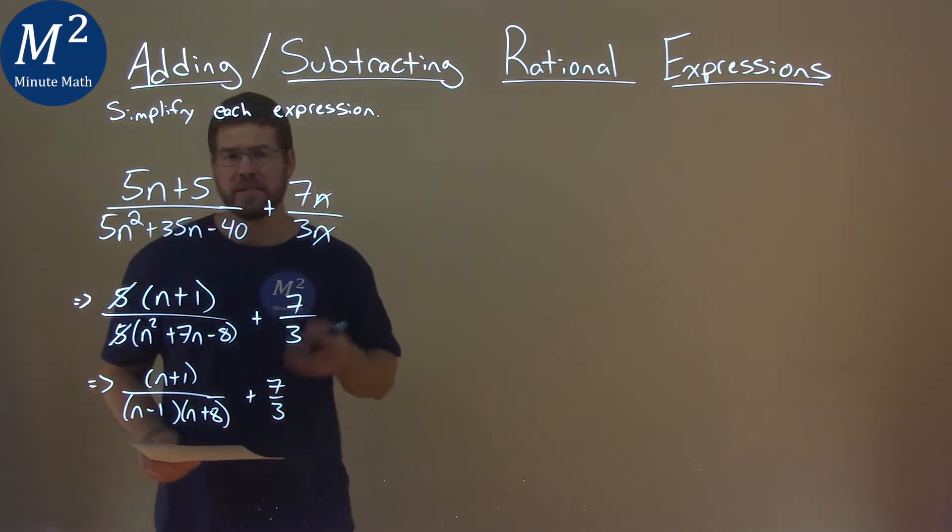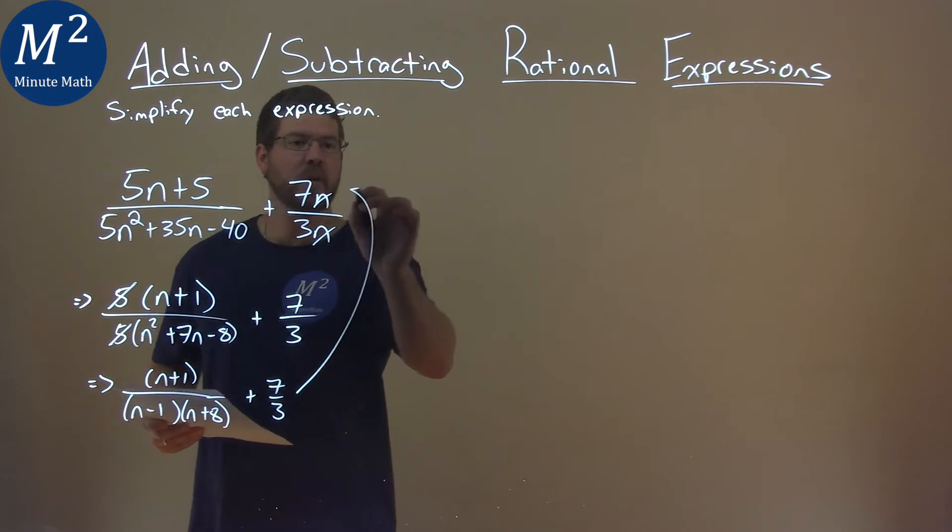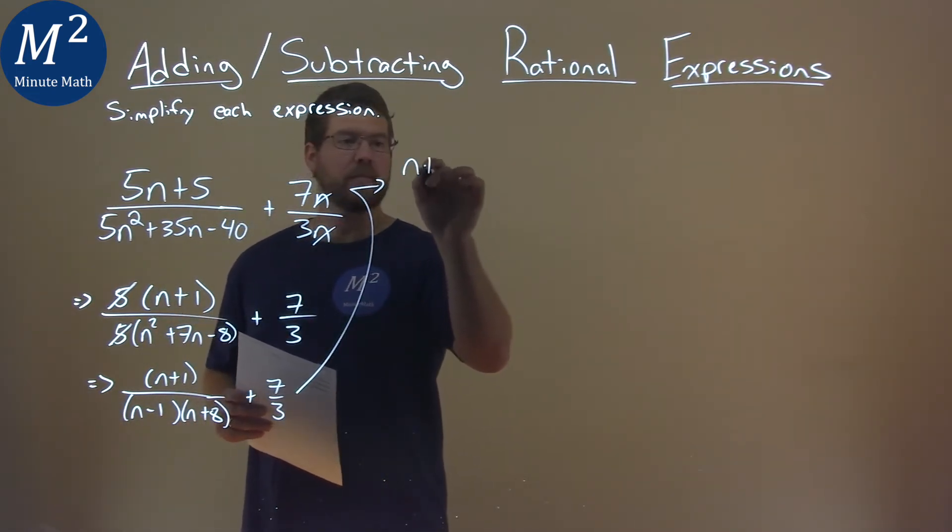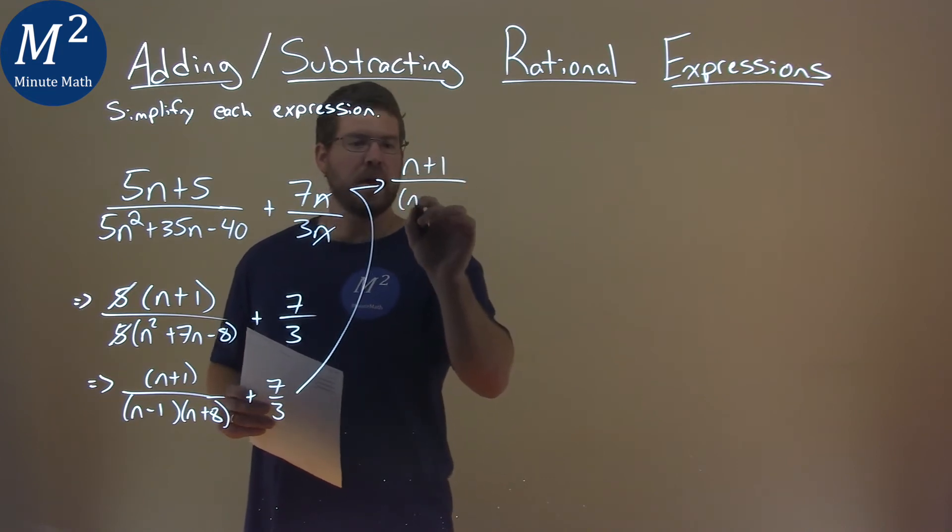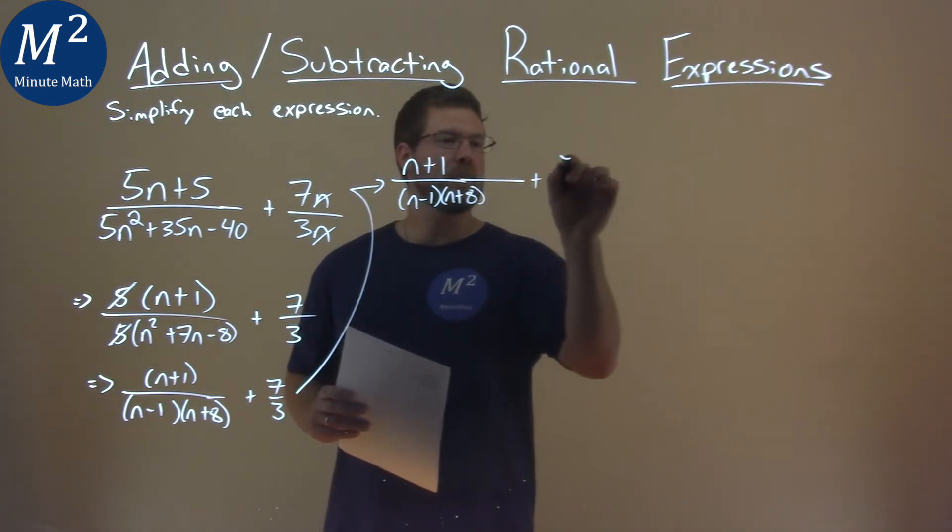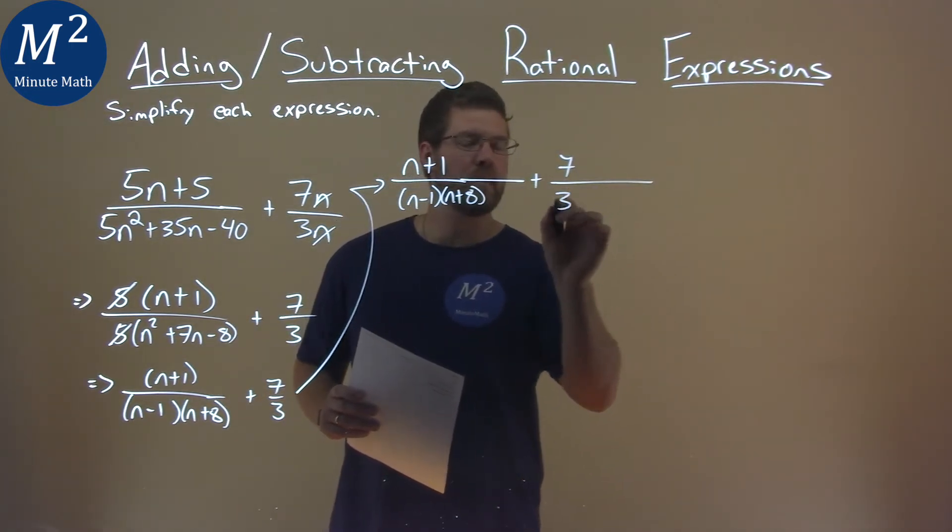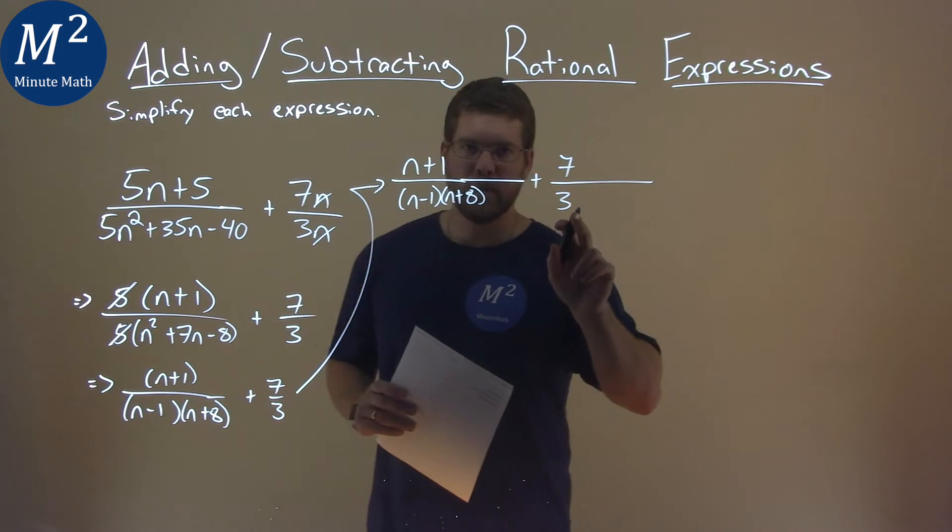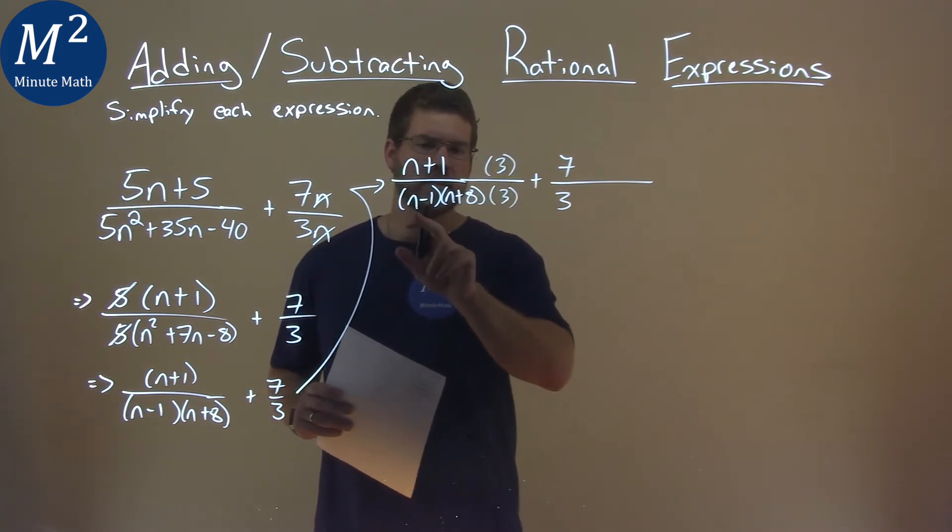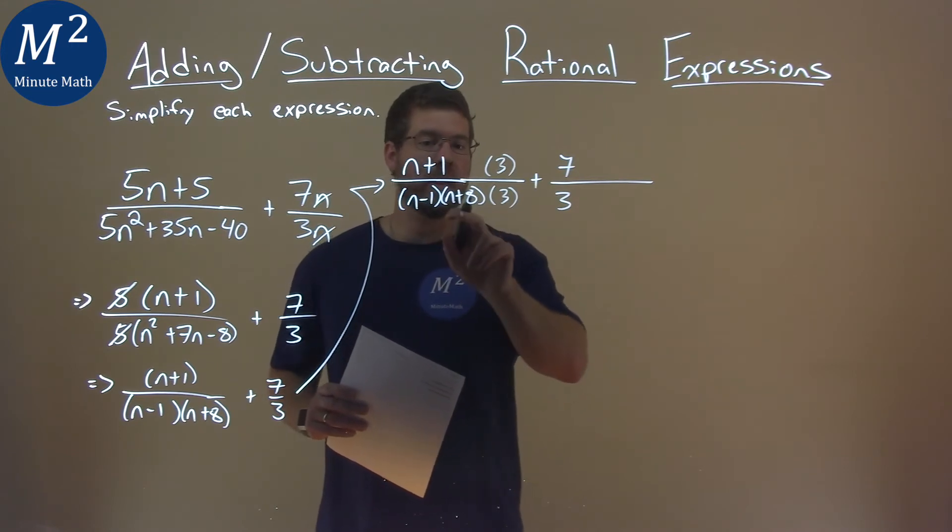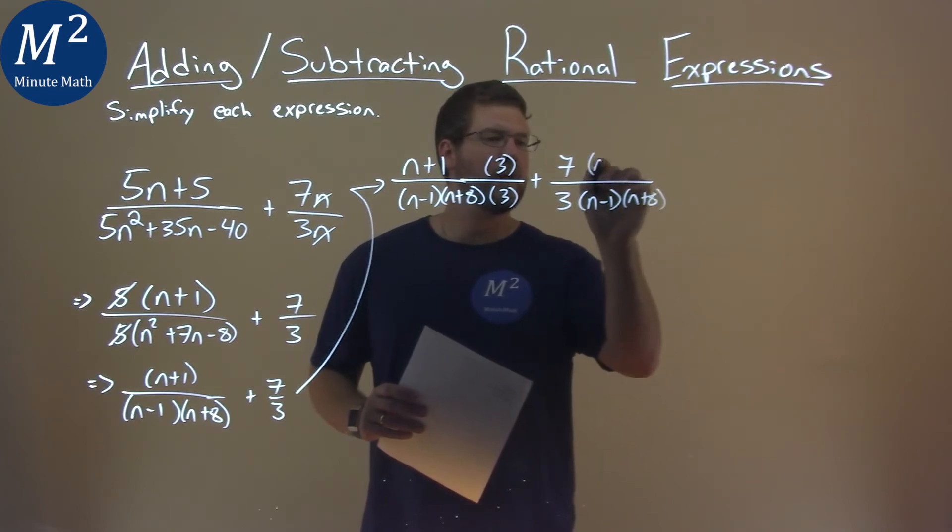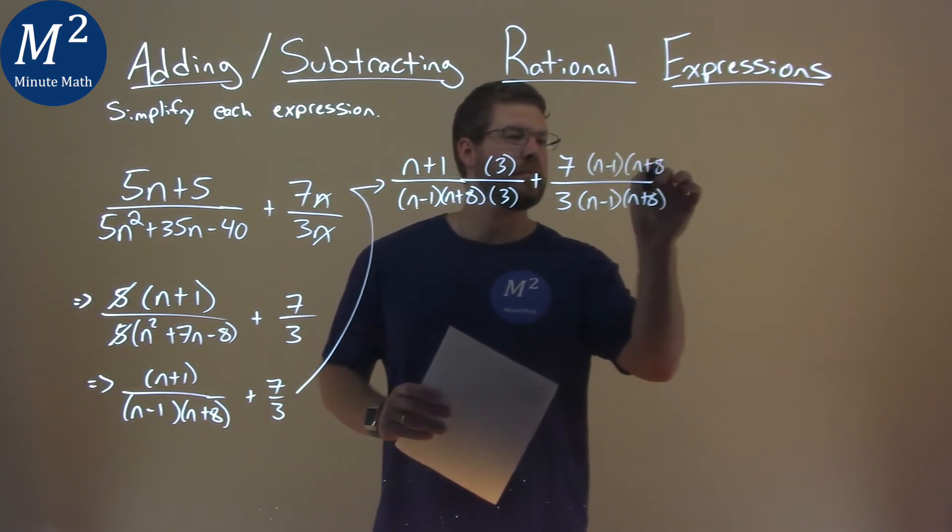We still need to combine these fractions by having the same base. So what I'm going to do here is rewrite this. Again, we have the n plus 1 over n minus 1 times n plus 8. Give myself a little space here, plus 7 thirds. But I'm going to take this third, that's the denominator, and multiply it here. Put it over itself. This other denominator, n minus 1, n plus 8, do the same thing here. n minus 1, n plus 8.